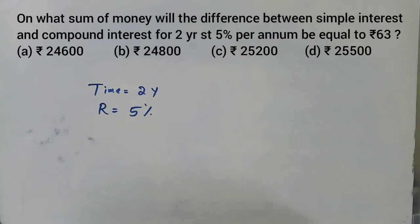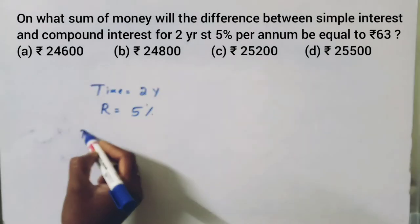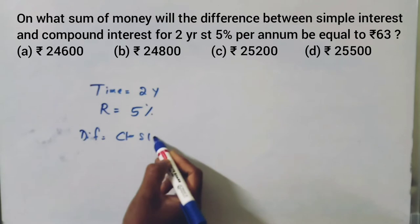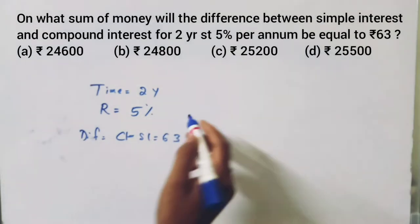Difference between CI and SI, difference between CI and SI equal to 63.